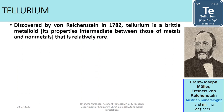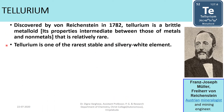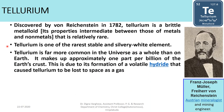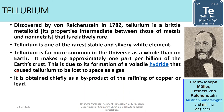Tellurium was discovered by von Reichenstein in 1782; he was an Austrian mineralogist and mining engineer. Tellurium is a brittle metalloid that is relatively rare — one of the rarest stable silvery-white elements. Tellurium is far more common in the universe as a whole than on Earth, making approximately one part per billion of the Earth's crust. This is due to the formation of a volatile hydride that caused tellurium to be lost to space as a gas. It is obtained chiefly as a byproduct of refining copper or lead.